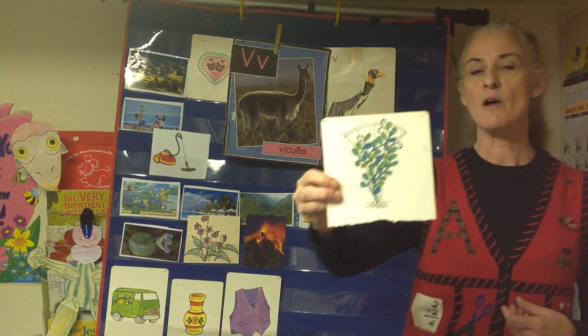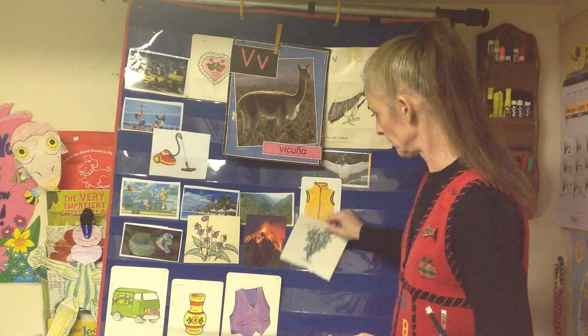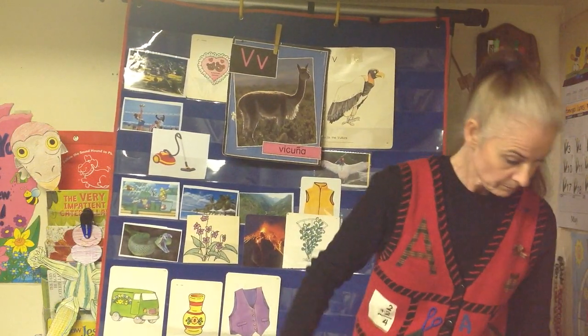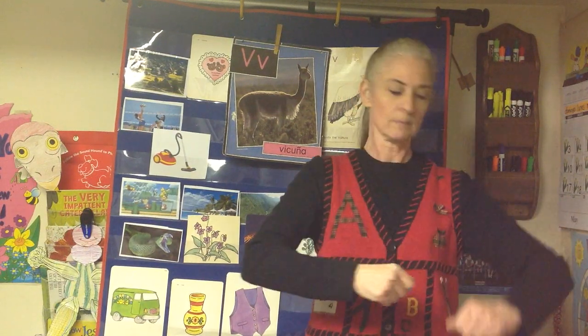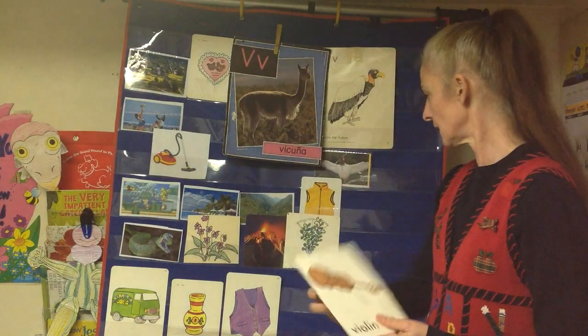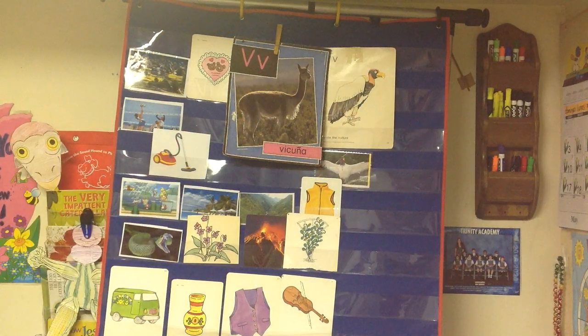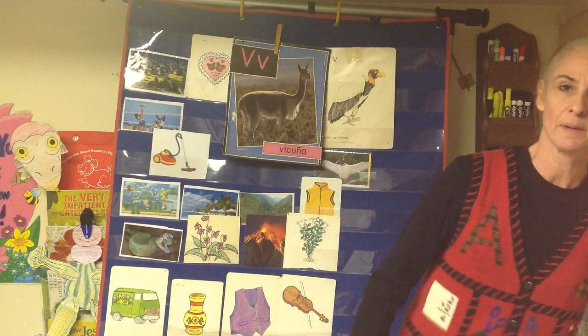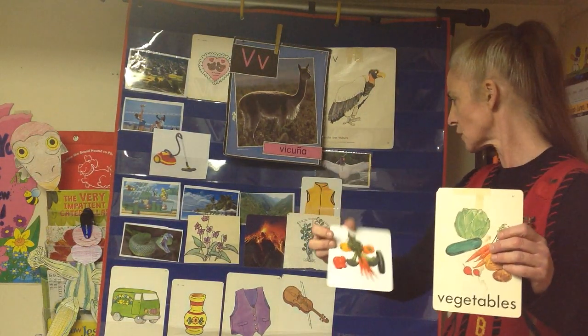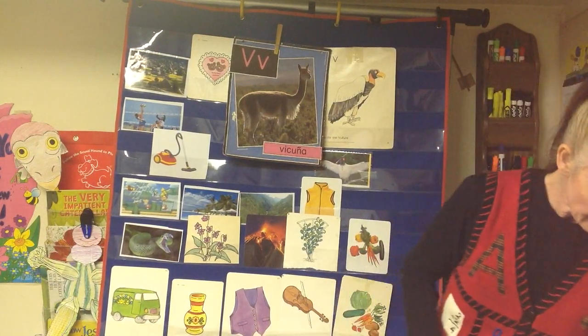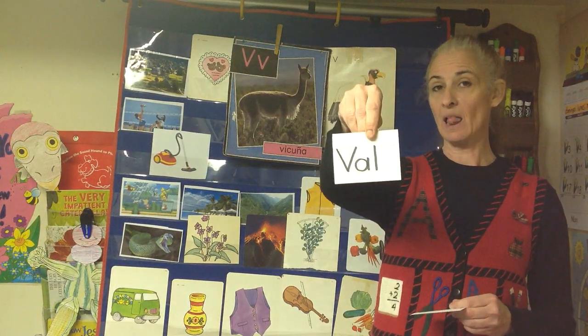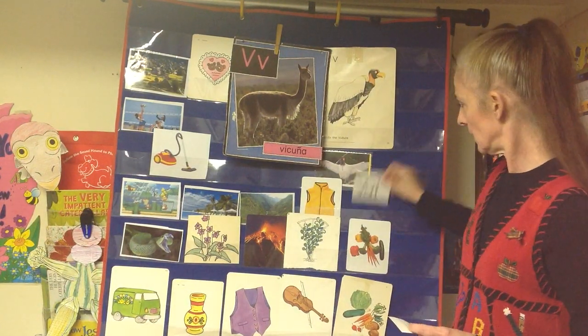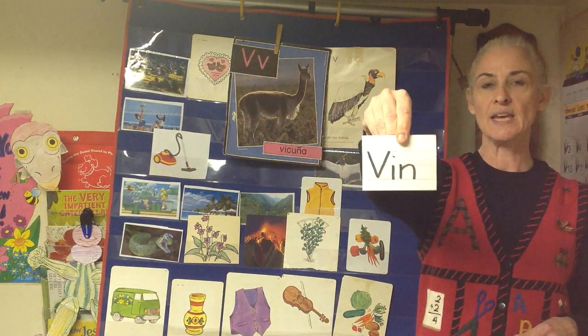Grapes grow on these — it's a type of plant that spreads really quickly, a lot of branches — a vine. The vine. This is an instrument — violin. The violin. The other day we talked about fruits and vegetables. A girl's name that is short for Valentina or Valerie could be Val. And a boy's name short for Vincent could be Vin.